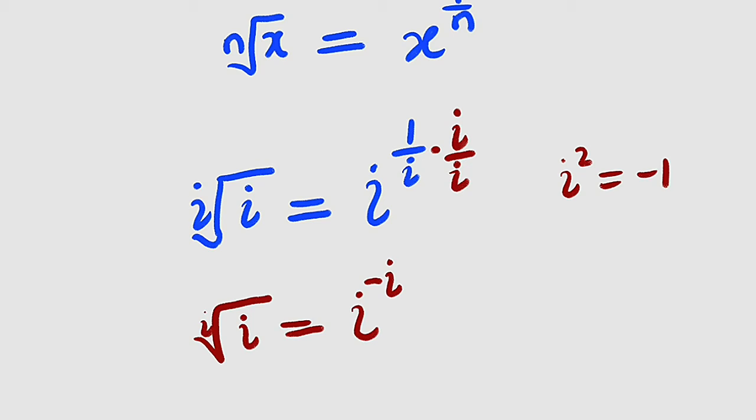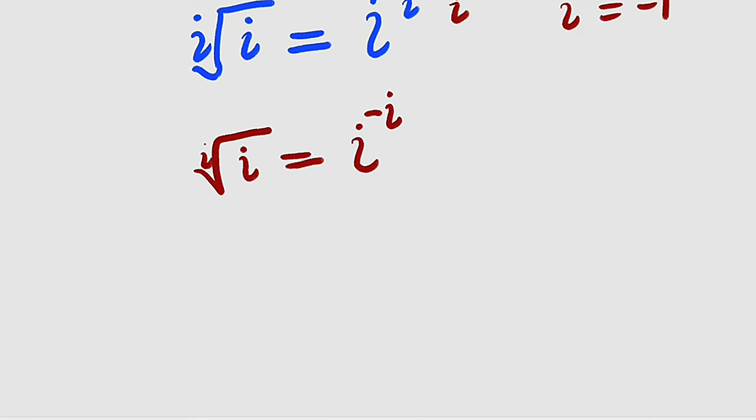And i to the negative i can be written as 1 divided by i to the power of i. So i root of i is now equal to 1 divided by i to the power of i.